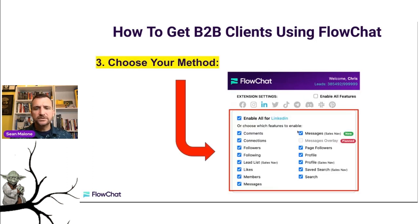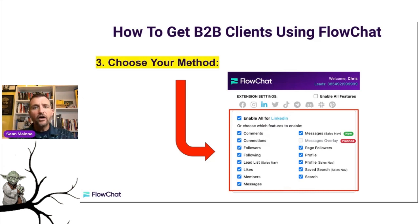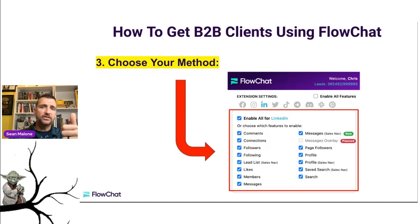Once we've chosen our platform, the next thing we do is choose the method by which we're going to find people. The first option is comments — we can go to any post on any of these socials and collect just the people who've commented on those posts. Likewise, if you have connections in your LinkedIn, we could collect those people, followers, or people you're following. If you have Sales Navigator, you can build an actual filtered set and import all of those people instantly. You can also go to posts that people have just liked — a thumbs up or a heart — and collect just those people and start messaging with them.